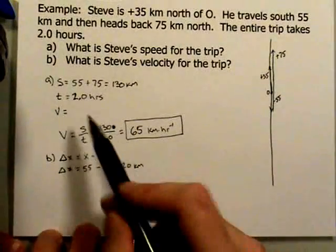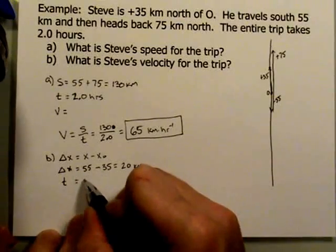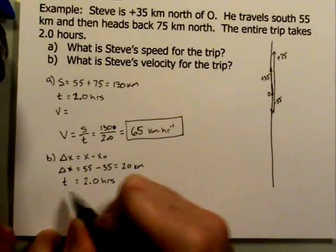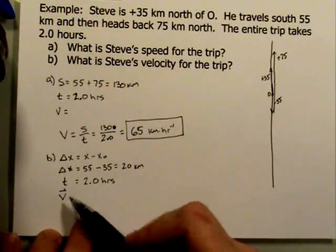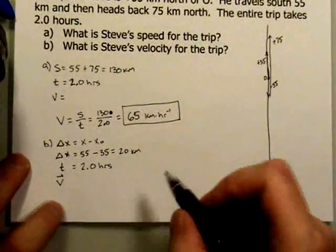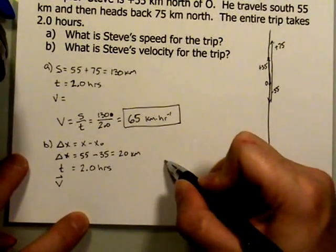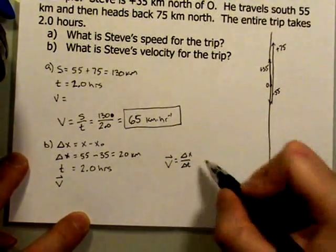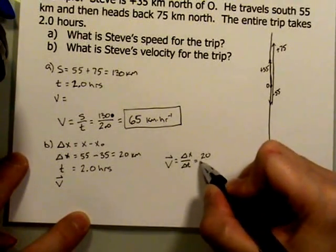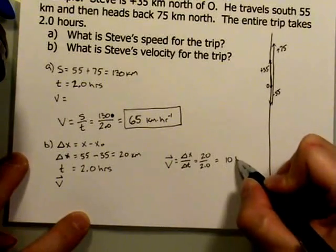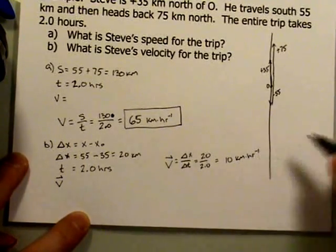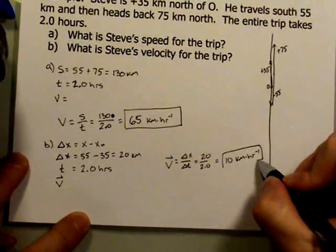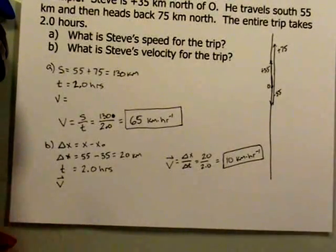Now, one thing that has not changed is the time was still the same no matter which one that we looked at. So that's 2.0 hours. And I am looking for now the velocity, not the speed. So in this case, let me move out to the right here. V is equal to delta x divided by delta t. And so that's going to be 20 divided by 2.0 to give me 10 kilometers per hour. And that's our final answer.